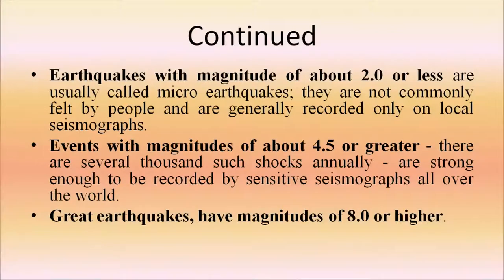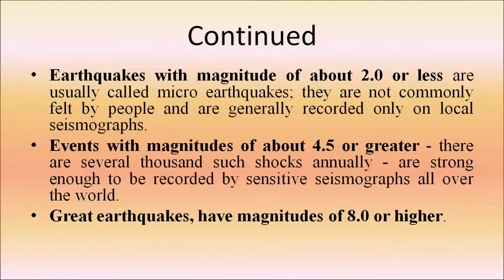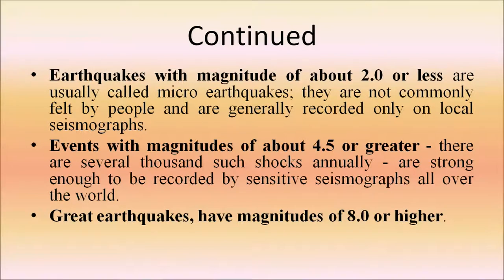On the Richter scale, magnitude is expressed in whole numbers and decimal fractions. Earthquakes with magnitude of 2 or less are usually called micro-earthquakes, not commonly felt by people and generally recorded only on local seismographs. Events with magnitude of about 4.5 or greater — several thousand such shocks annually — are strong enough to be recorded by sensitive seismographs all over the world. Great earthquakes have magnitude of 8 or higher.